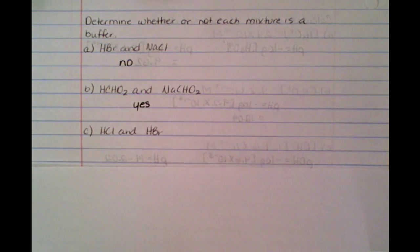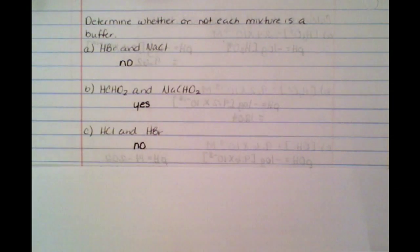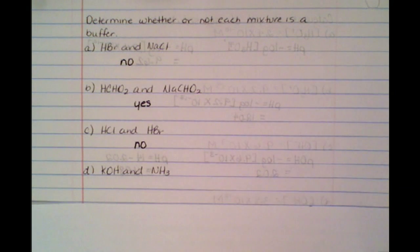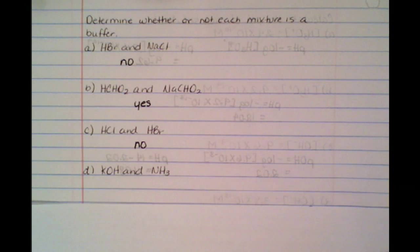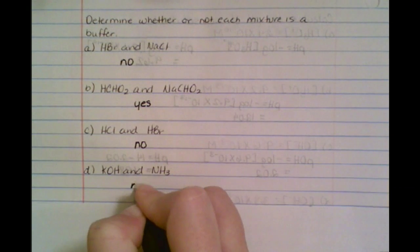Again, if we have CL and BR, they don't look the same, so this is not going to be a buffer. And here we have KOH and NH₃ — that's a base and a base. There's no O in NH₃, so they don't match, and this one is also not a buffer.